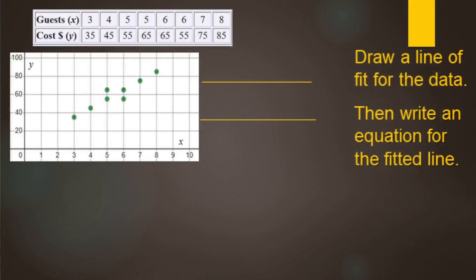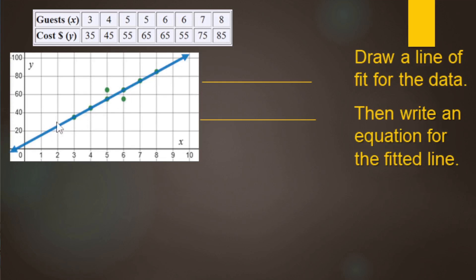Now that we have the scatter plot, it's time to draw a fitted line. Go ahead and pause the video, make a fitted line, then come back. For this one it's pretty straightforward — most of the points go in a straight line, so you follow those and end up with one above and one below the line. It's meant to be an easy one.